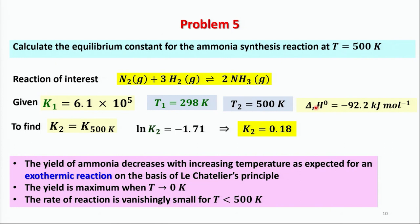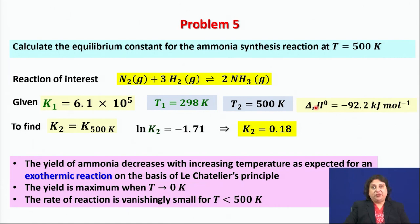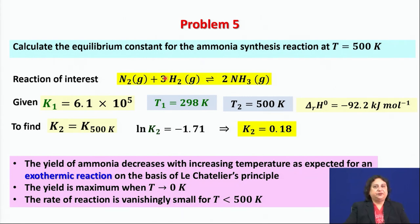Le Chatelier's principle tells us that when the equilibrium mixture is heated, the system shifts to absorb the additional heat. This promotes the reverse direction — where ammonia dissociates into nitrogen and hydrogen — specifically, 2 moles of ammonia dissociating into 1 mole of nitrogen and 3 moles of hydrogen.